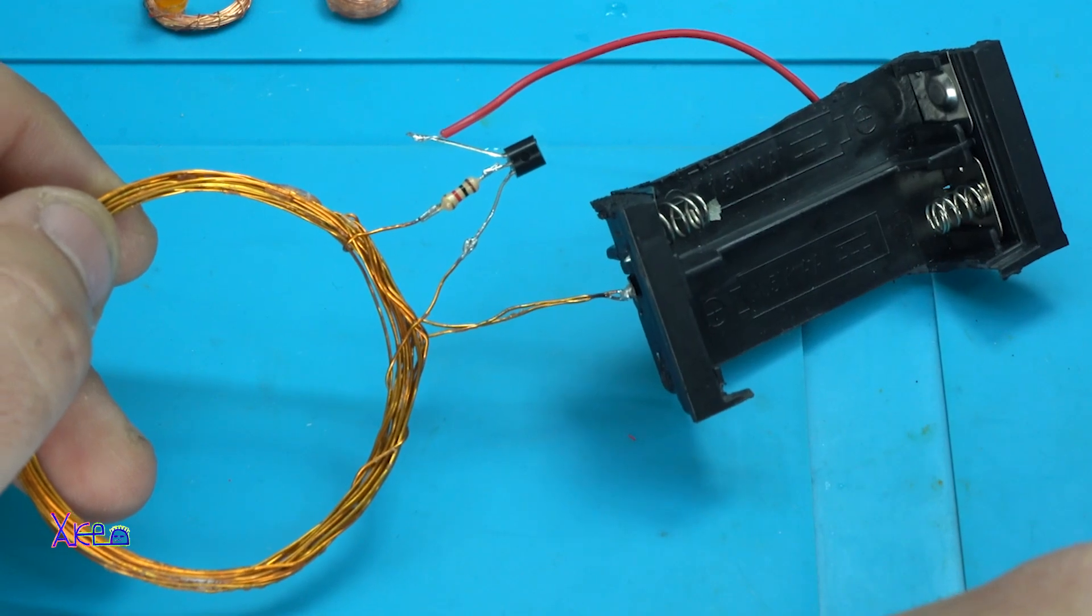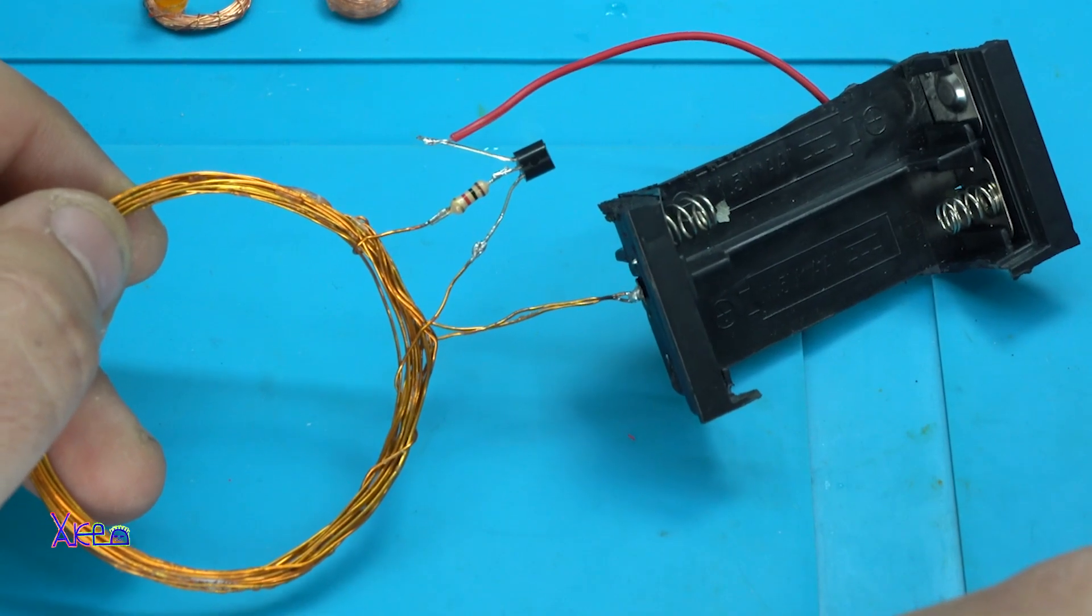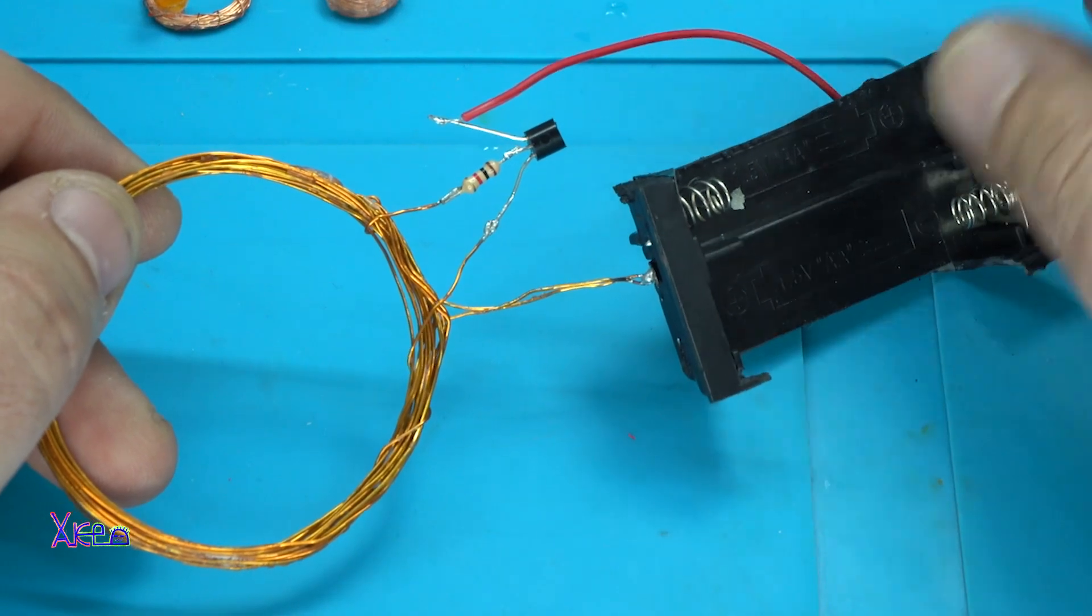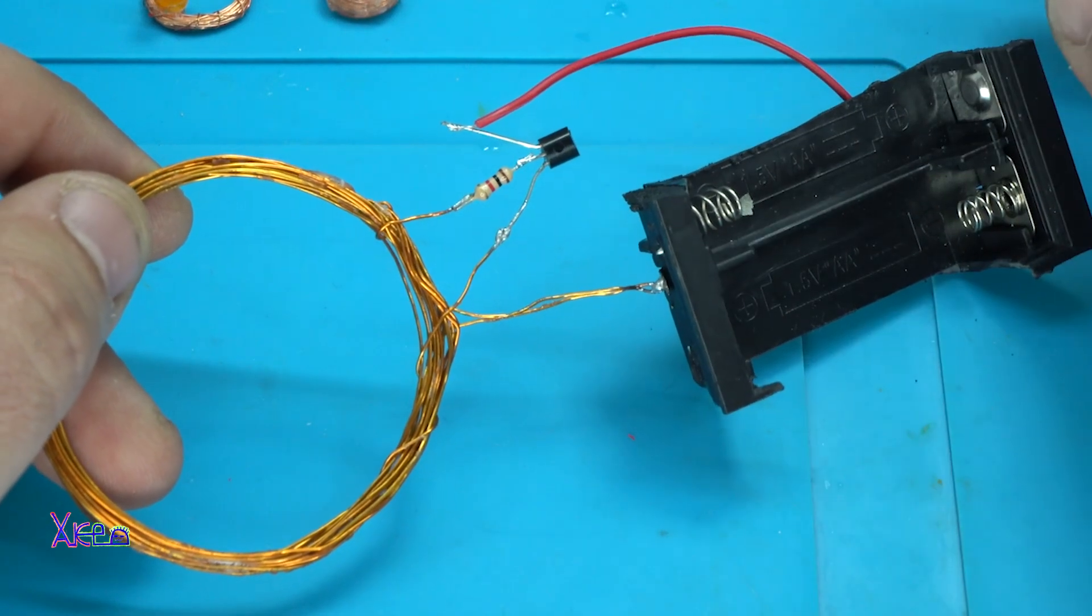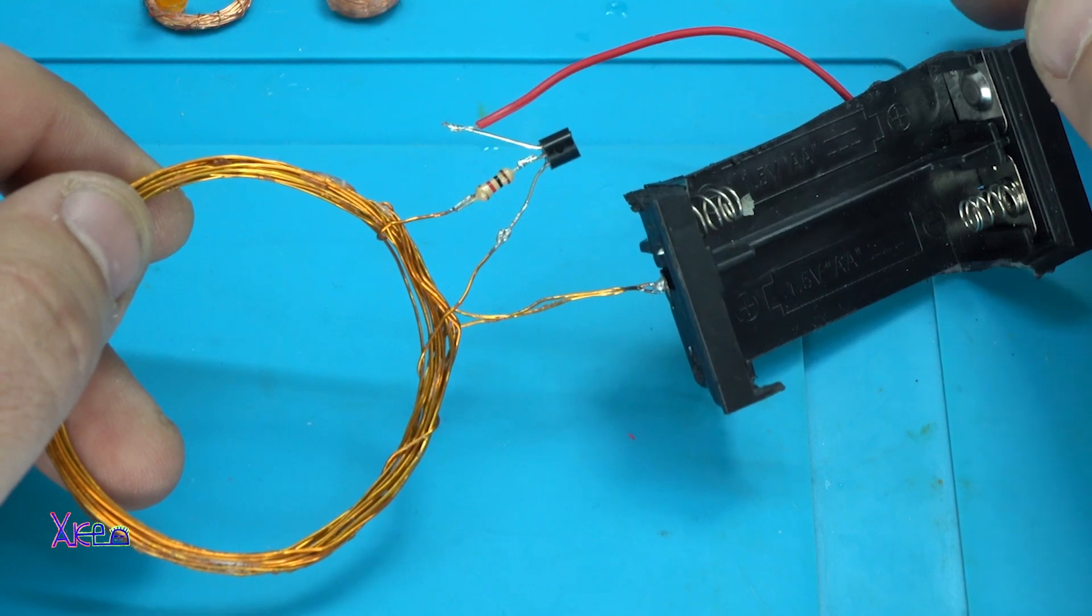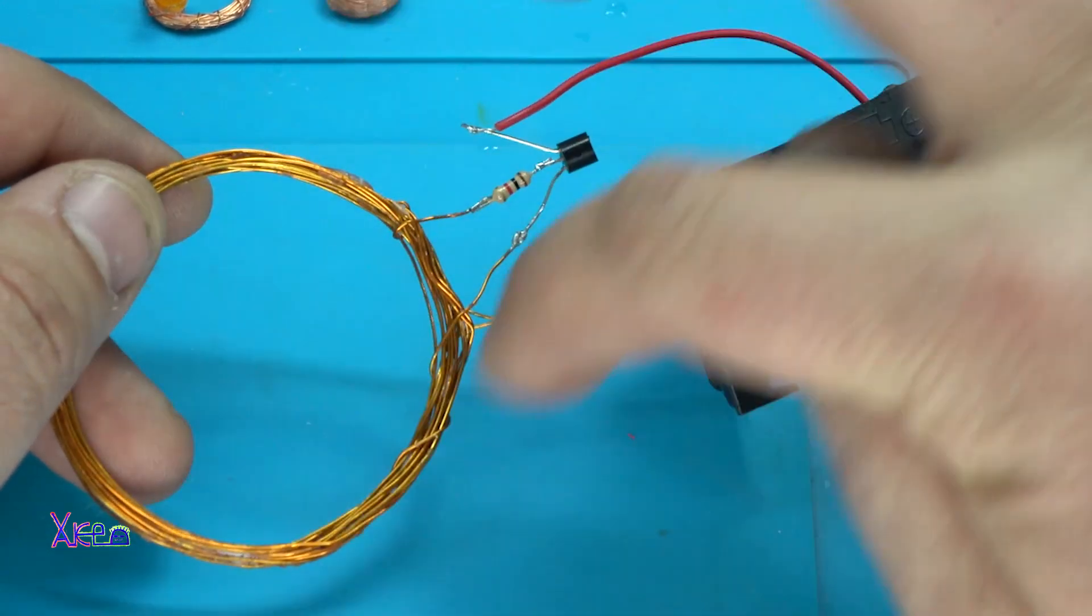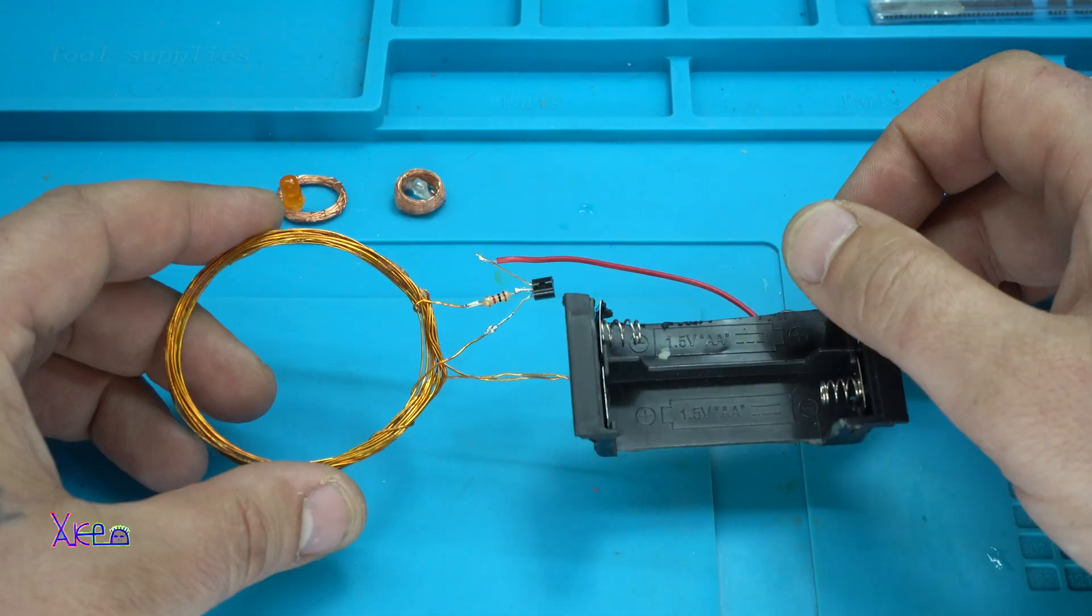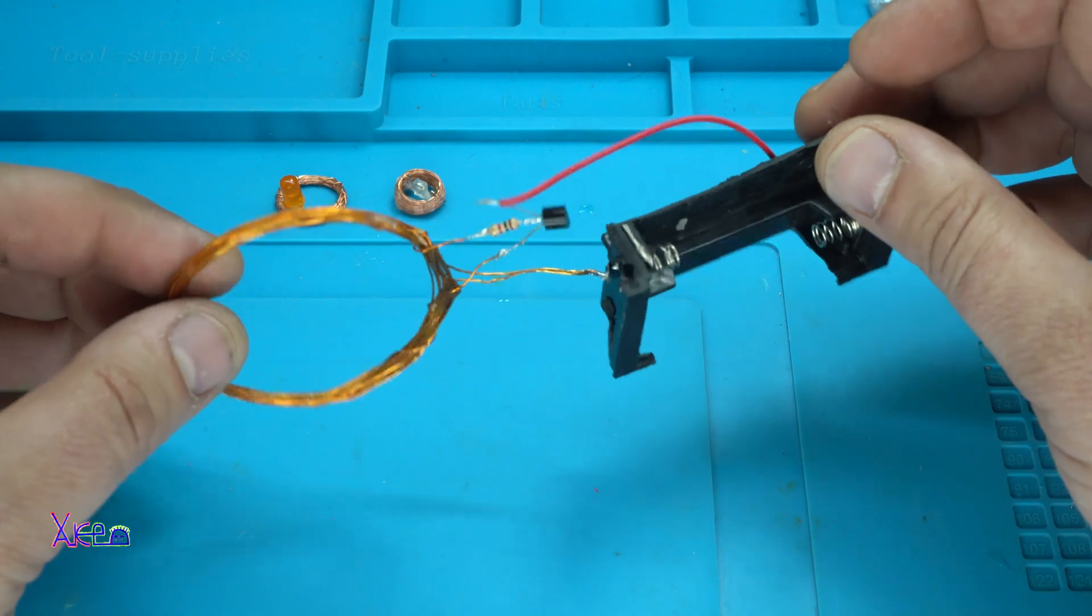NPN or PNP doesn't matter. I'm using BC337 because this transistor can handle above 300 milliamps and believe me this circuit is pulling above 100 milliamps and much more in some cases.